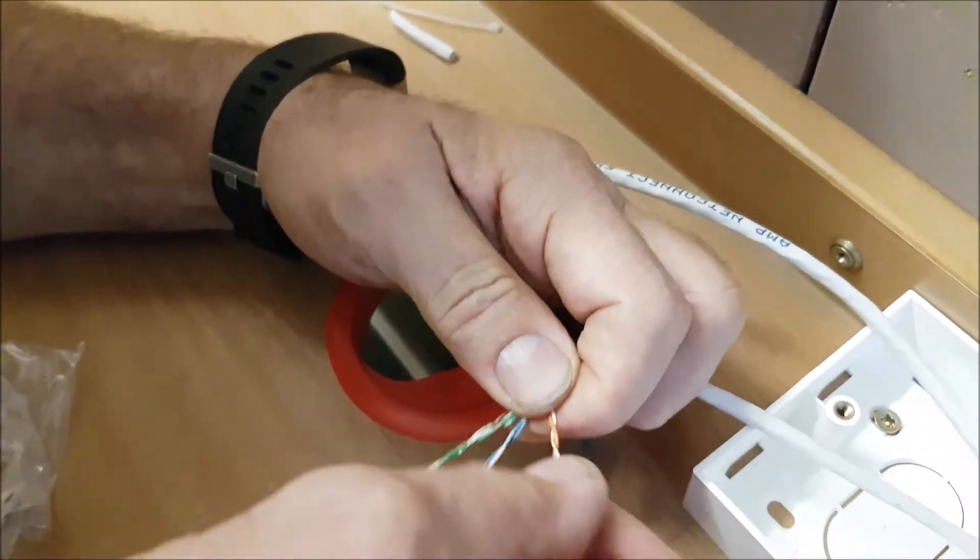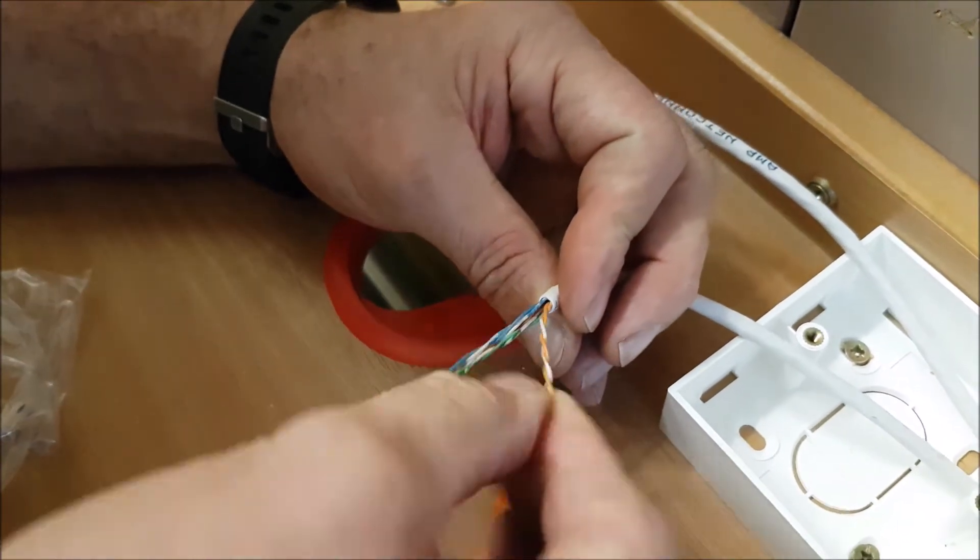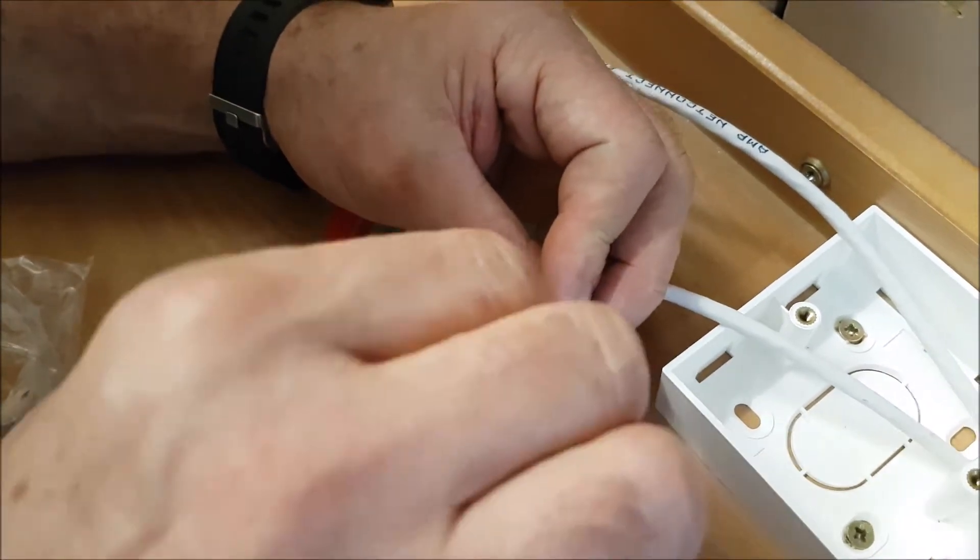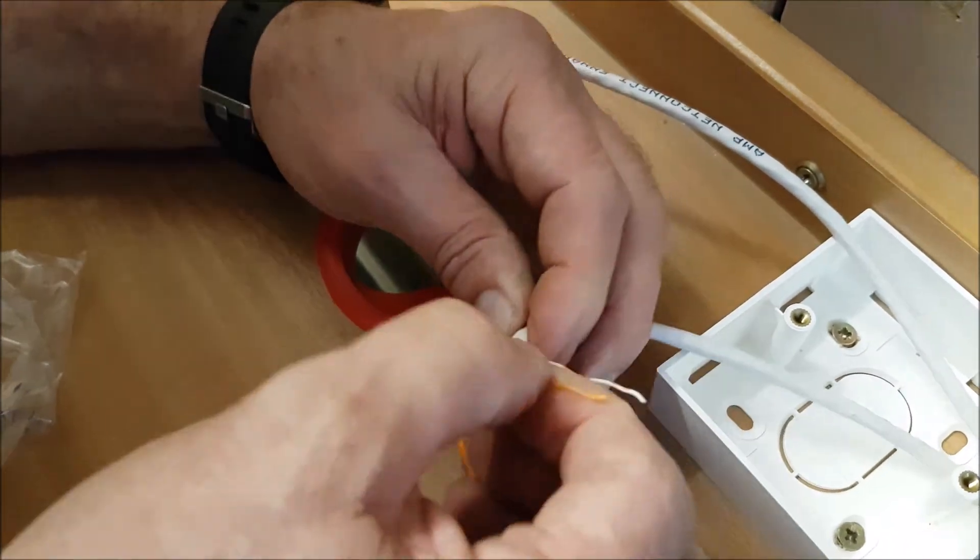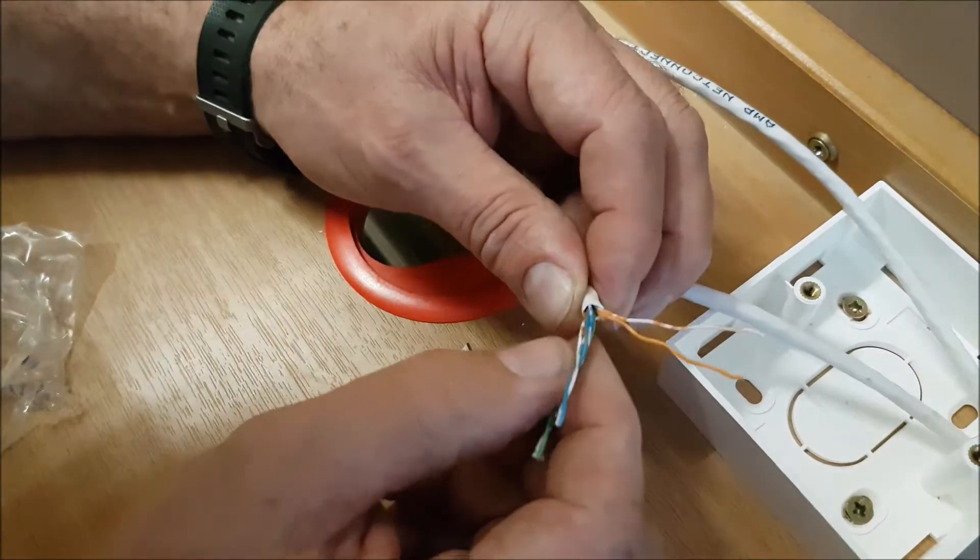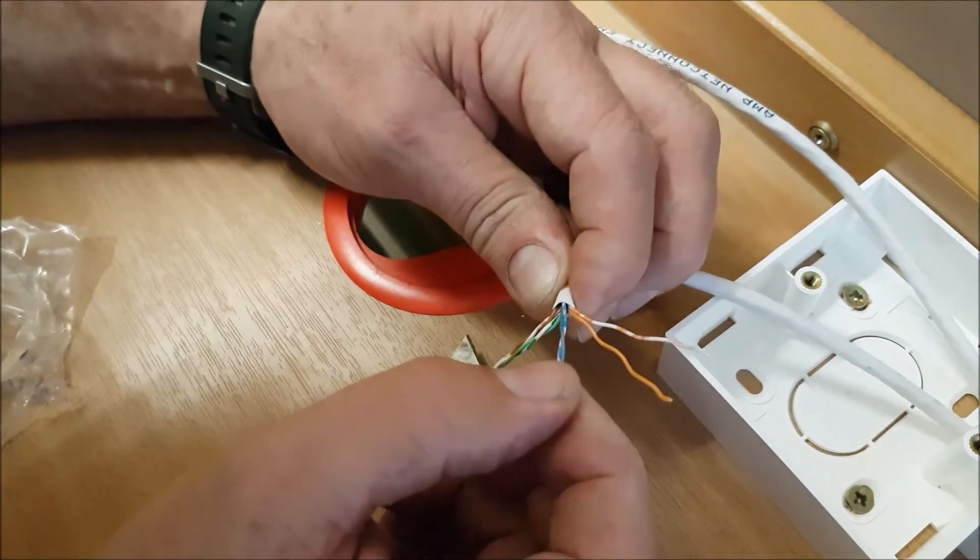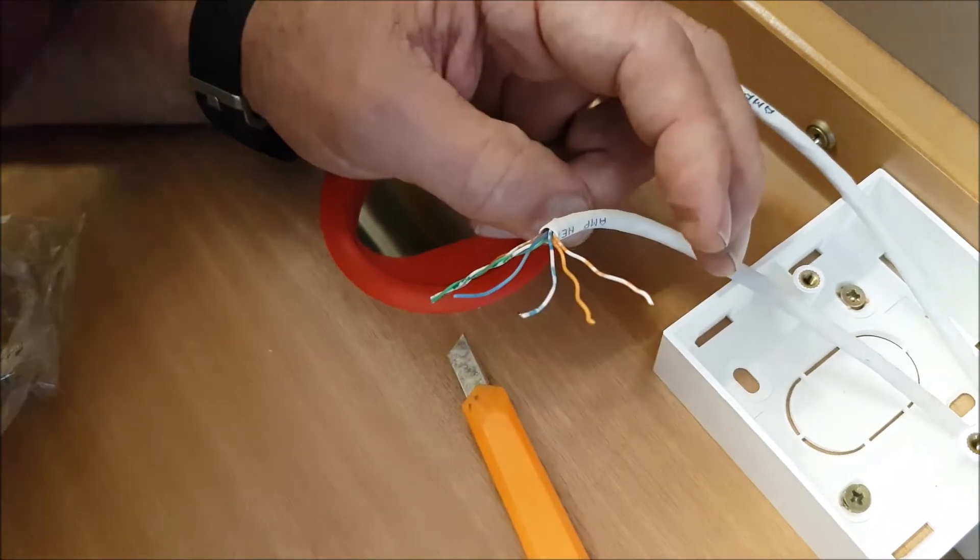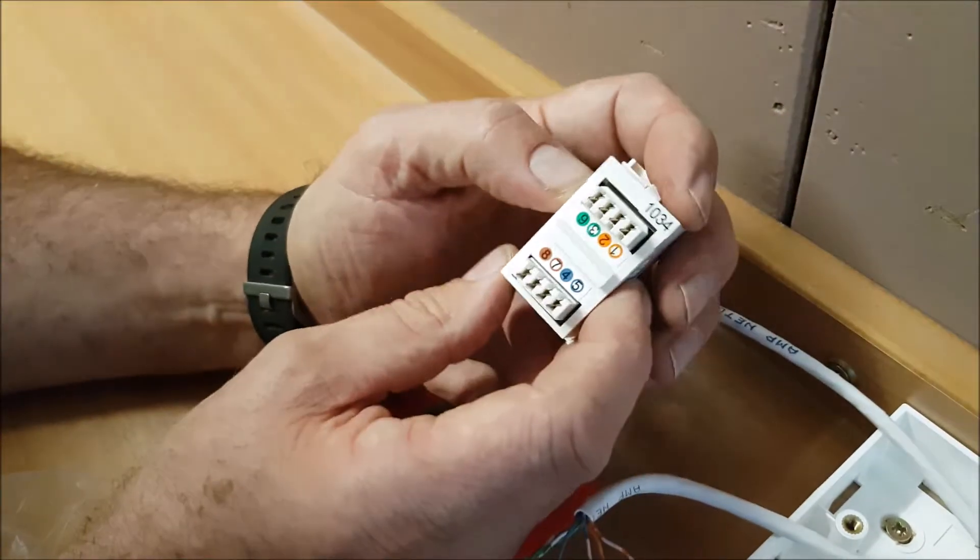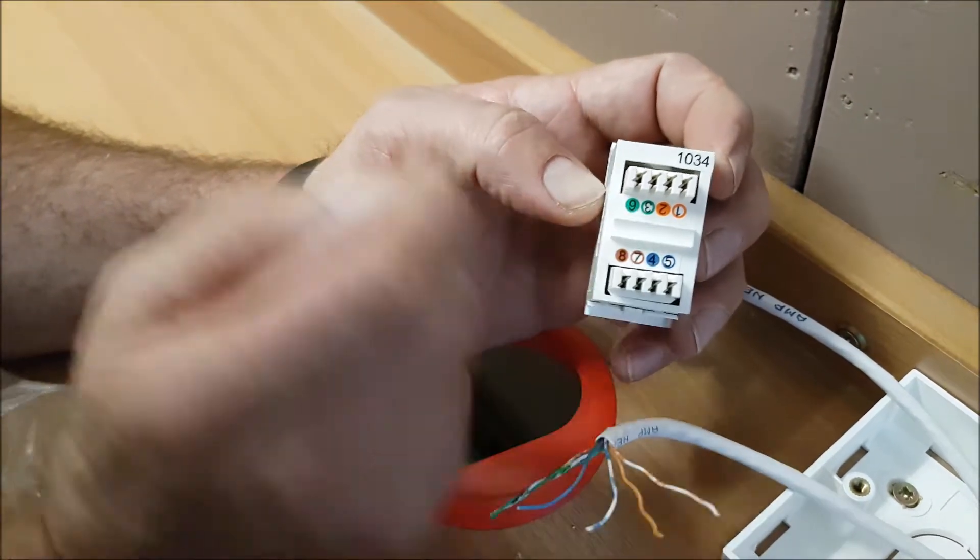There we go. So we're going to untwist orange and white because they're twisted and you can't get them in. The color code is orange and white, orange, green and white, blue, blue and white, green, brown and white, brown. That is if you're crimping your RJ-45 connectors. With this one, if you look at it, see orange and white, orange, green and white, not blue. It's green so it's fine.